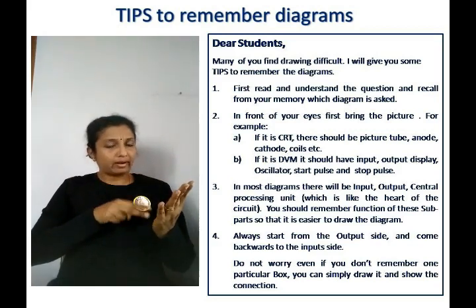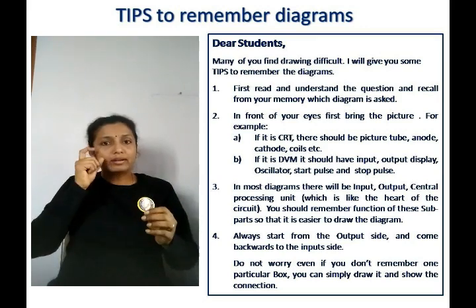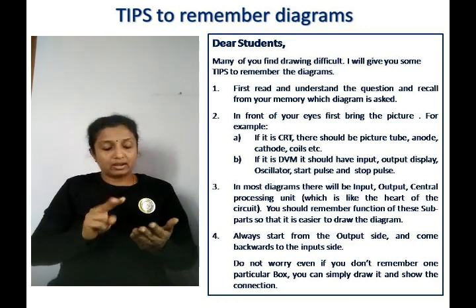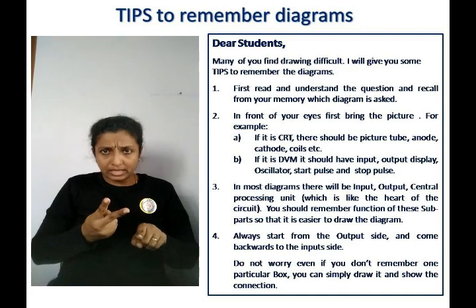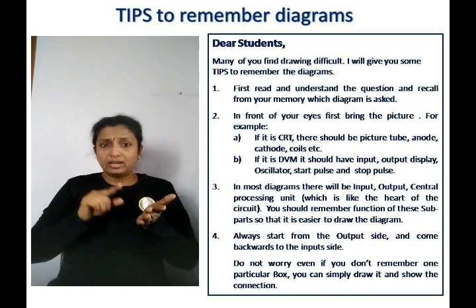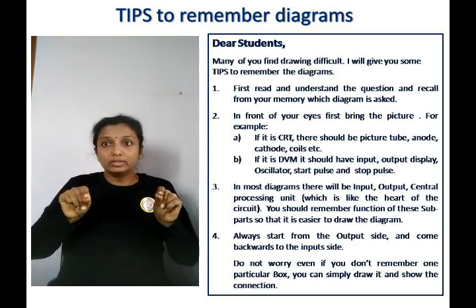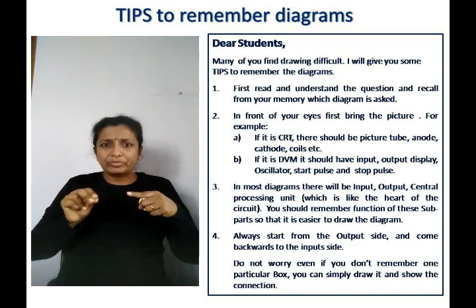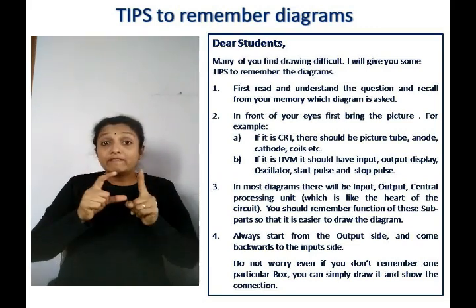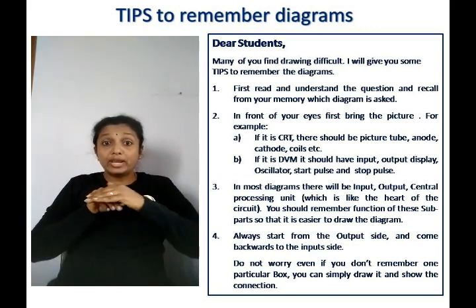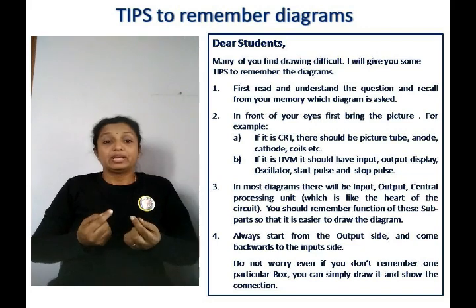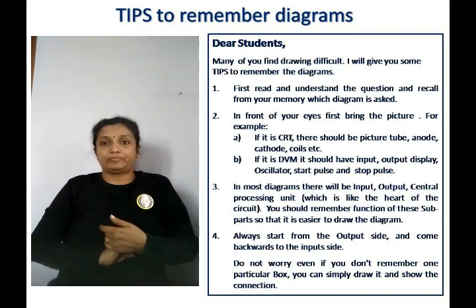First, read and understand the question and then recall which diagram is asked. Second, in front of your eyes first bring the picture. For example, if it's CRT, there should be picture tube, anode, cathode, coil, etc. If it's DVM, it should have input, output, display, oscillator, start pulse, and stop pulse.